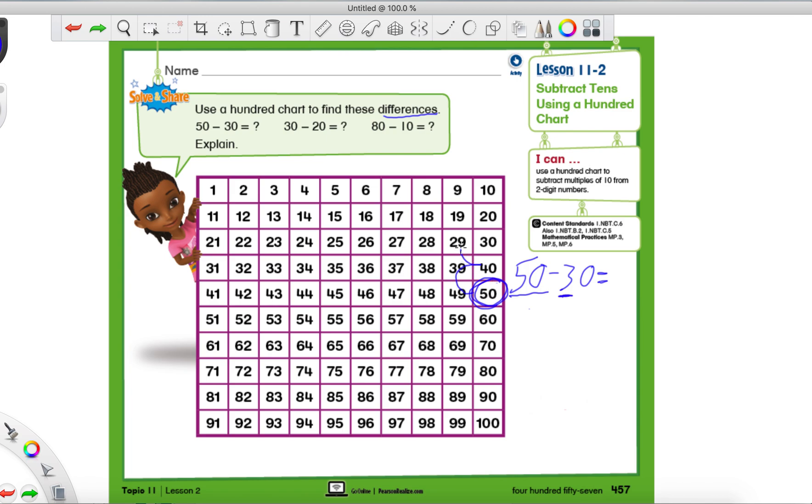So let's make three jumps. One, two, three. So now we know that 50 minus 30 is 20.